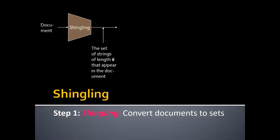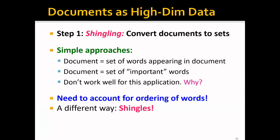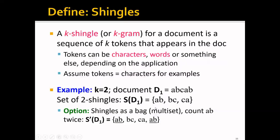Let's focus on the first step: shingling, which converts documents to sets. A naive approach would be to use a set of words or important words directly from the document, but these do not work well because they do not account for the ordering of words, which carries a lot of information. This is why we need shingles. Formally, a k-shingle (or k-gram), where k is chosen by us, is a sequence of k tokens that appear in the document. Tokens can be characters, words, or something else depending on the application.